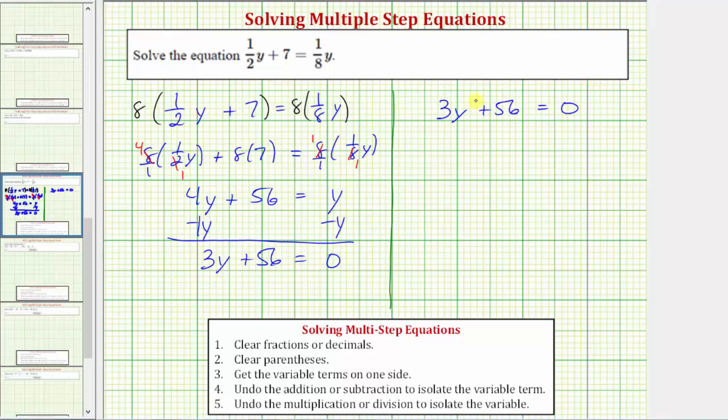The next step is to isolate the y term by adding or subtracting. Therefore, to undo plus 56, we will subtract 56 on both sides of the equation. Subtracting 56 undoes plus 56, or 56 - 56 is 0, so now we have 3y = 0 - 56 is -56.